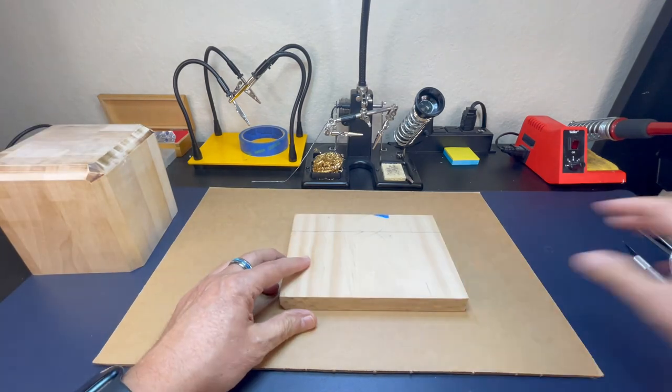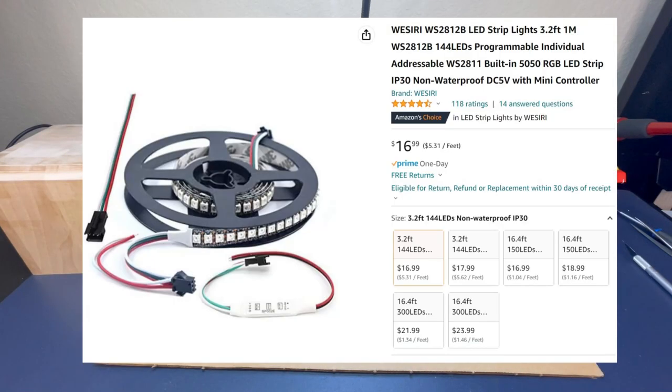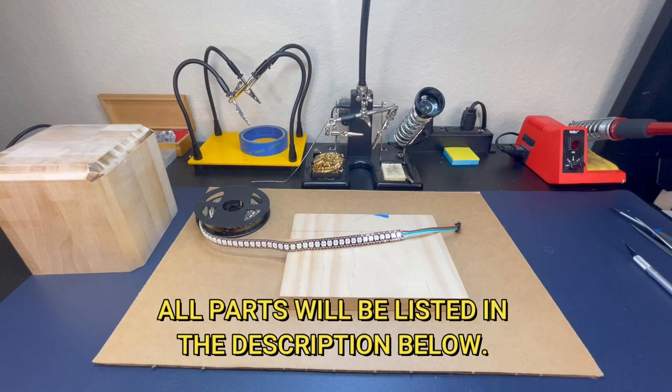Now let's talk about the LED. The LED strip I'm using has 144 LEDs on the 3.2 foot strip. It also has a mini controller to change the modes.